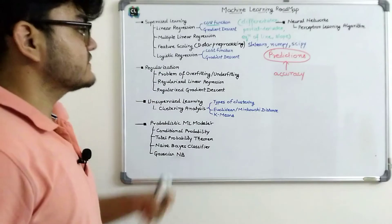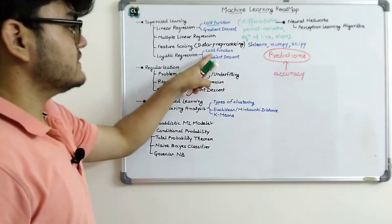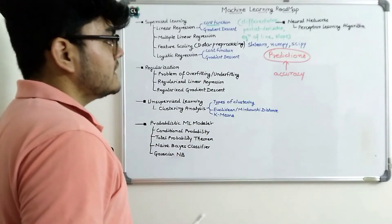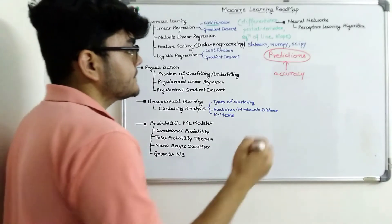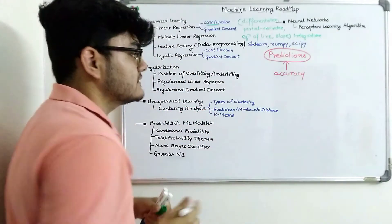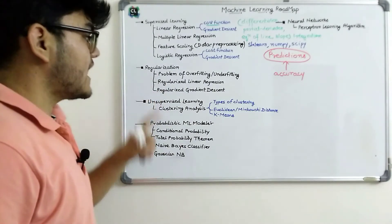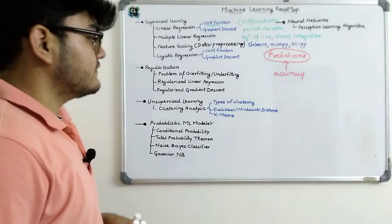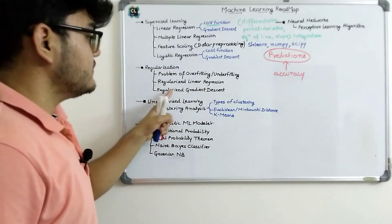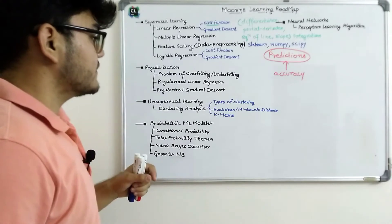The next concept is logistic regression for classification. Like linear regression, it also uses a cost function and gradient descent, so differentiation and integration are both required. After that comes regularization, where you must understand the problems of overfitting and underfitting, regularized linear regression, and regularized gradient descent.